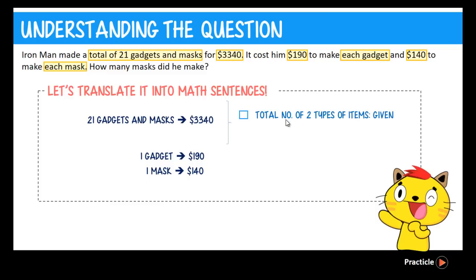For such a question, whereby the total number of two types of items are given - here the two types of items refer to the gadgets and the mask - and then when each type of item is actually unknown, we don't know how many gadgets Iron Man made or how many masks Iron Man made individually.